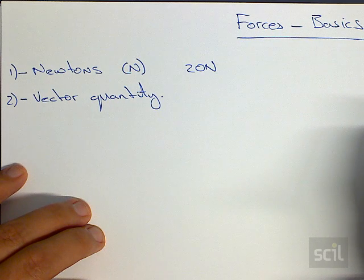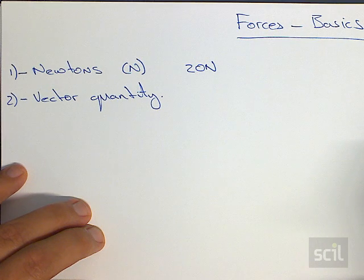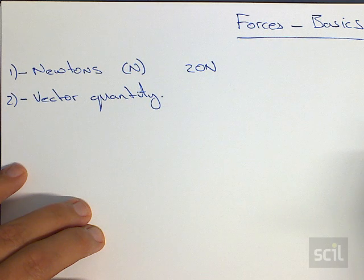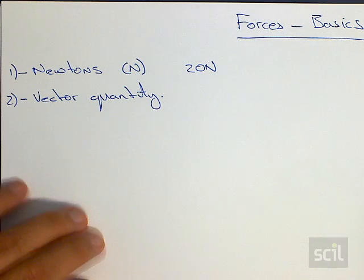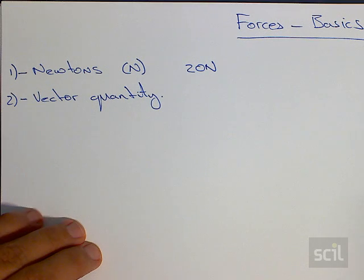Vectors have both a magnitude and a direction. And a force is a very good example of one of these. Another one is velocity, acceleration, and also displacement. So all the vector quantities have both magnitude and, importantly, a direction.